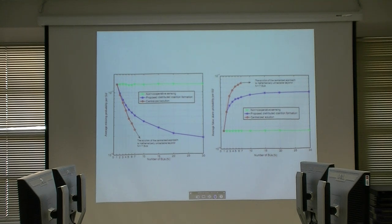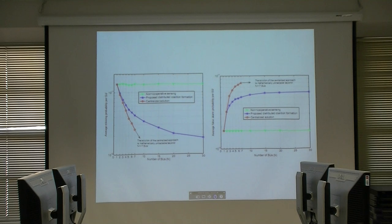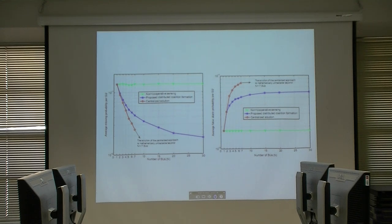In the simulation results, the green line shows the result of sensing without any cooperative sensing, the red line is the centralized mathematical solution — the theoretical optimum — and the blue line is the simulated distributed algorithm. On the left axis is the probability of misdetection and on the right is the probability of false alarm. One axis shows the number of secondary users — so we can see what happens to the probability of detecting the primary user as the number of secondary users increases, with one primary user present.